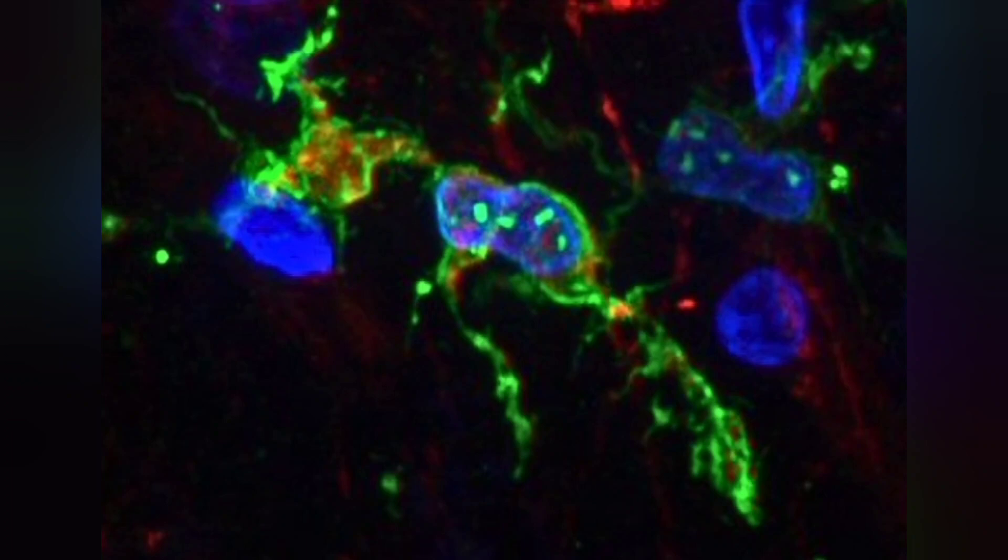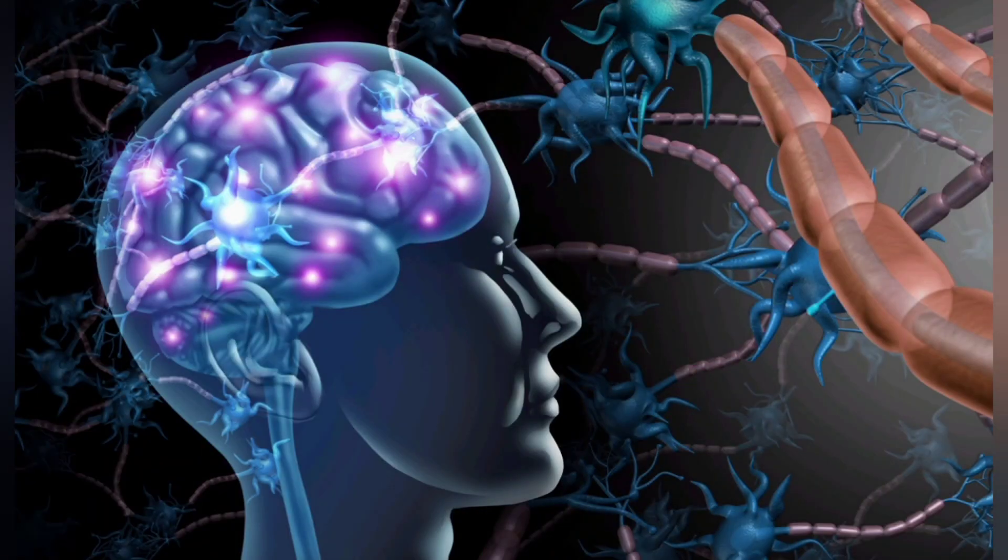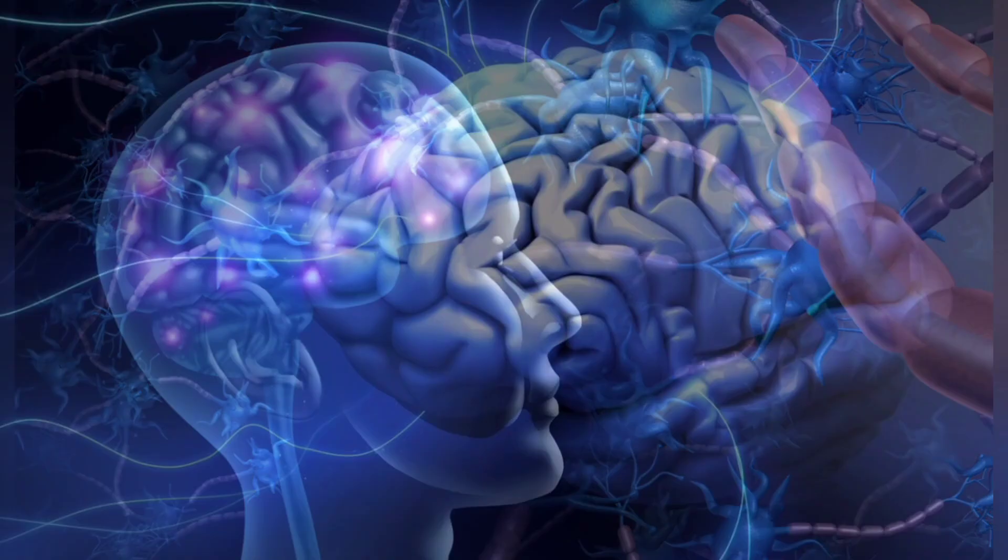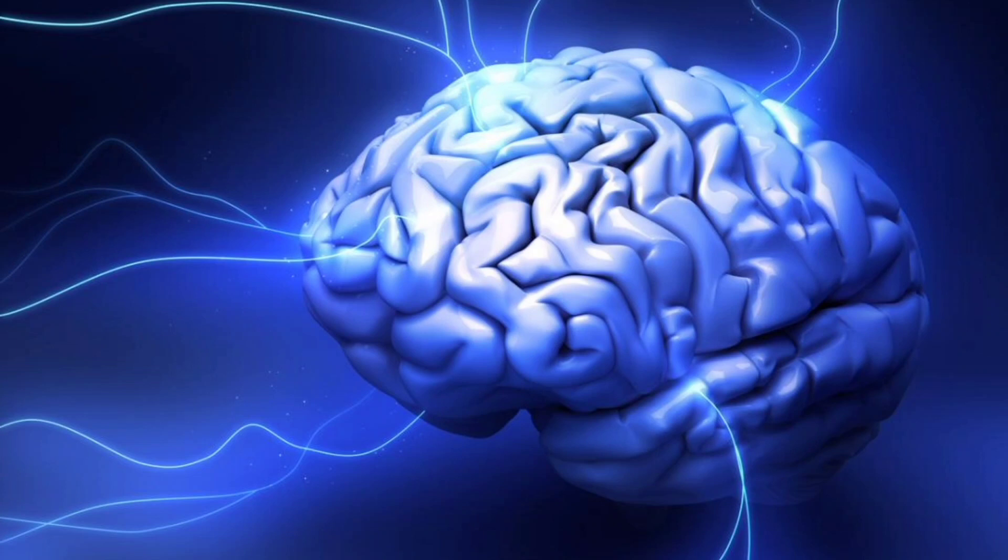They also prune synapses during development, which helps shape the circuitry for our brains to function well. It's less certain what part they play in Alzheimer's, but in people with the devastating neurodegenerative disease, some microglia respond too strongly and may cause inflammation that contributes to the death of brain cells.